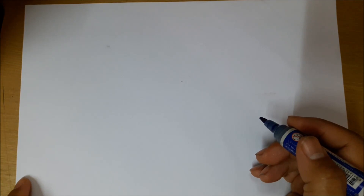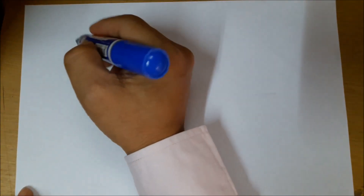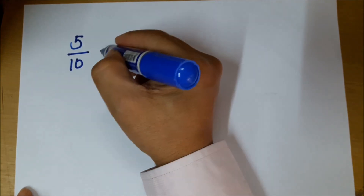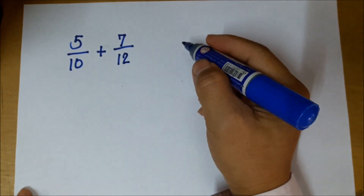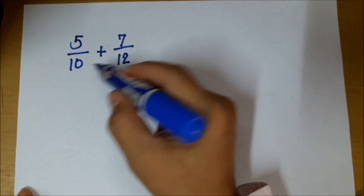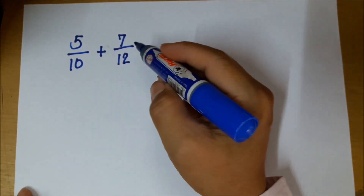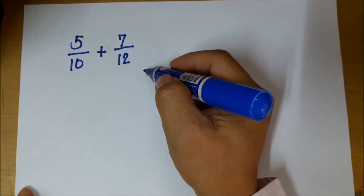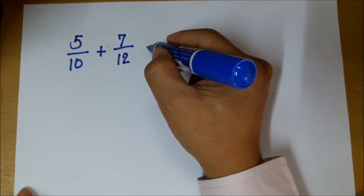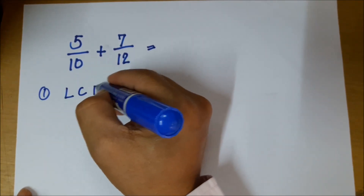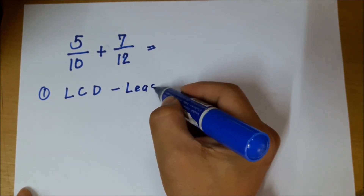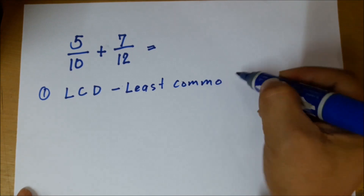What we're going to learn today is how to find the least common denominator. For example, if you have the fraction 5 over 10 and you're going to add it with 7 over 12, these fractions have different denominators — 10 and 12. In fractions, you cannot add fractions which have different denominators, so the first thing to do is find the LCD. LCD means least common denominator.